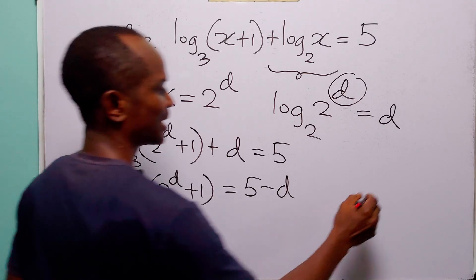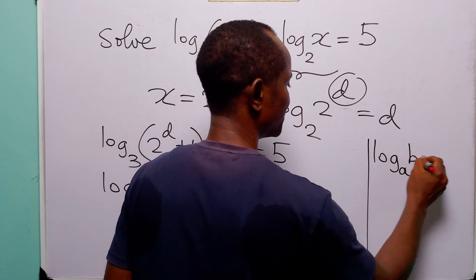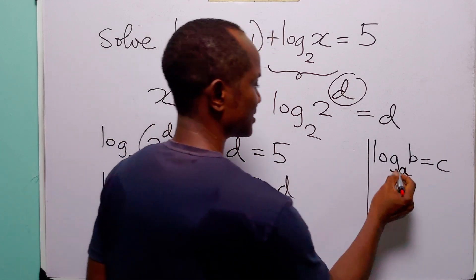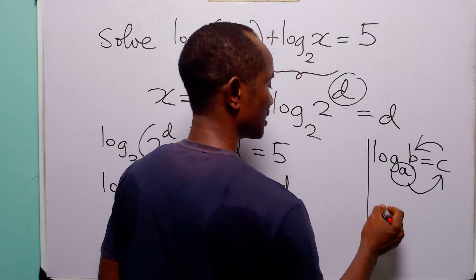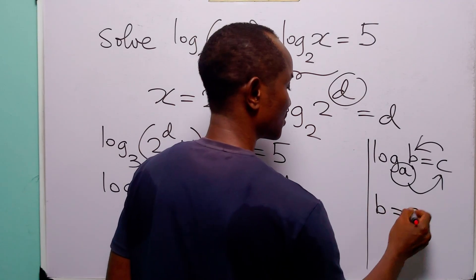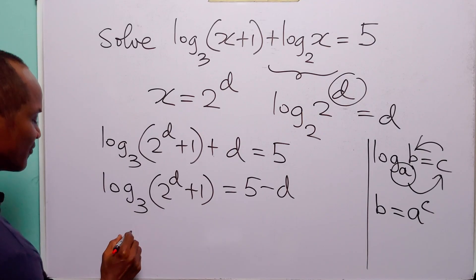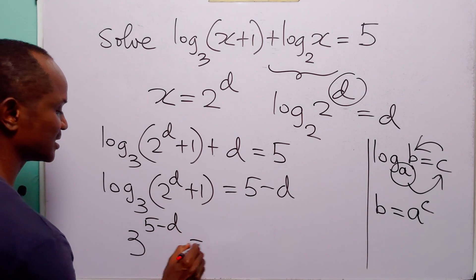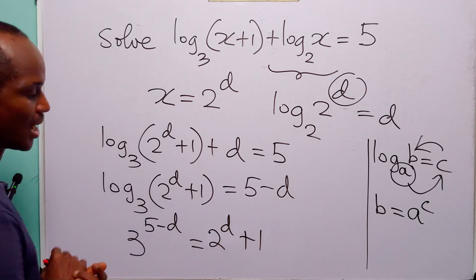Remember that when you have a statement such as log to base a of b is equal to c, we can also write this as a to the power c is equal to b — that is, b is equal to a to the power c. So in this case, we have that 3 to the power 5 minus d is equal to 2 to the power d plus 1.